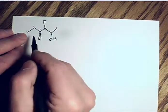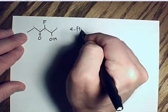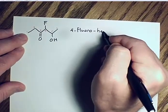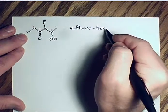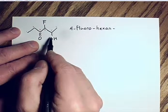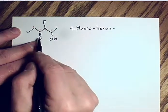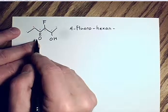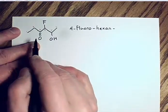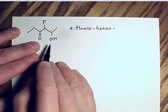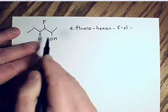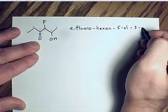The fluoro group is a prefix on carbon four. Six carbons in the chain gives 'hex,' no double or triple bonds gives 'hexane.' The alcohol group is on carbon five. Since alcohol is less important than ketone, the ketone is written last. Alcohol is on five — '5-ol' — and the ketone is on three — '3-one.' So the name is '4-fluoro-hexane-5-ol-3-one.'